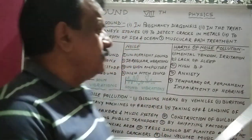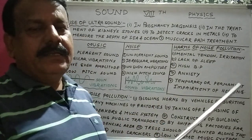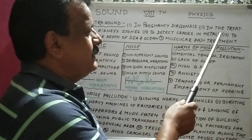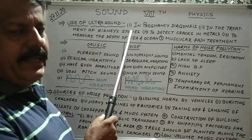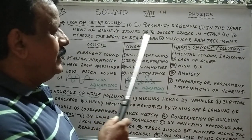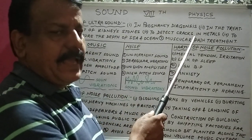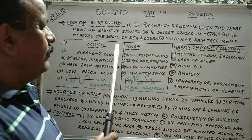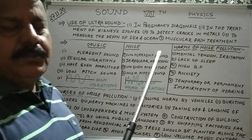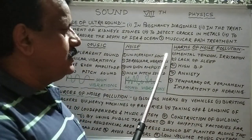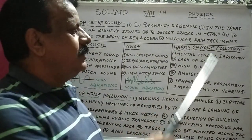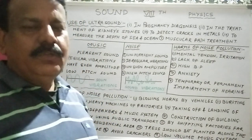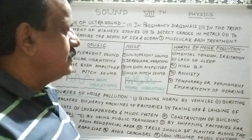Use of ultrasound. It is used in pregnancy diagnosis. It is used in the treatment of kidney stones. It is used to detect cracks in metals. It is used to measure the depth of sea and ocean, and also for muscular pain treatment. These are the important uses of ultrasound.